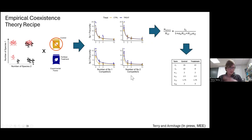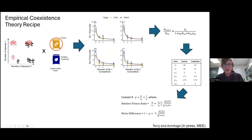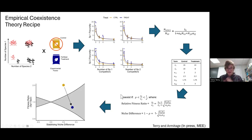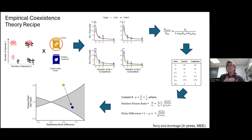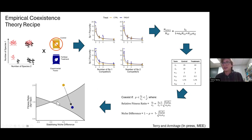Here we have a Beverton-Holt model, which is used to find parameters that can determine key coexistence quantities. There's obviously a variety of options for defining niche and fitness differences. On the coexistence plane diagrams, in the gray zone on the right, fitness differences between the species don't overwhelm the niche differences, implying coexistence is possible. In this particular example, the addition of fertilizer shifts the system from species one excluding two into a state of predicted coexistence. All wonderful.